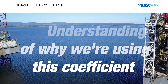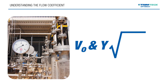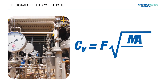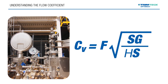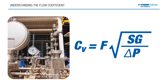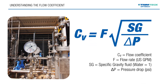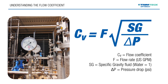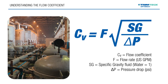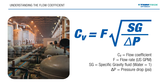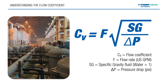The formula is often seen but not always understood. CV is equal to the flow rate times the square root of the specific gravity of the fluid over the pressure drop. Let's dive into the formula so as to better understand the coefficient.